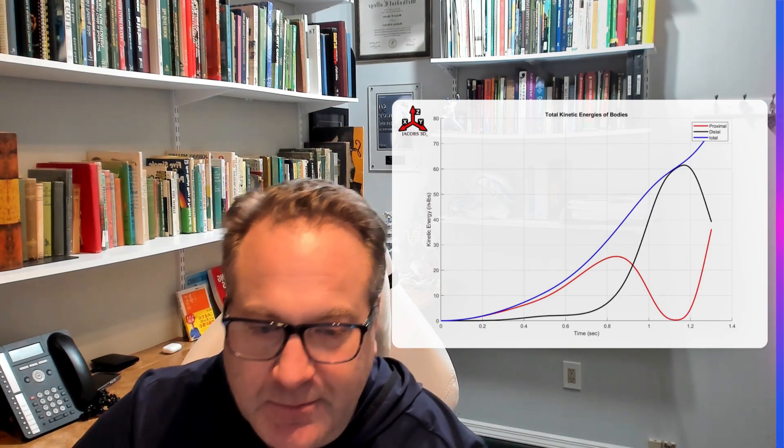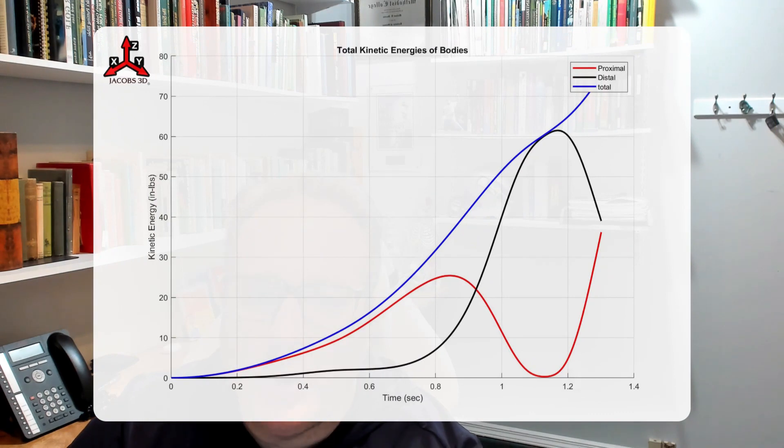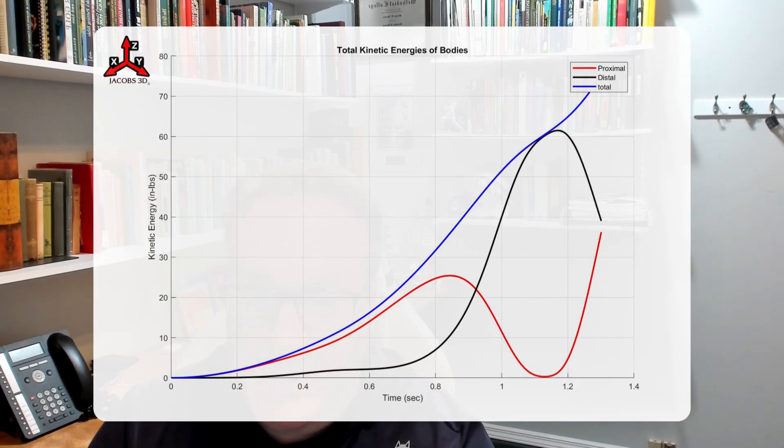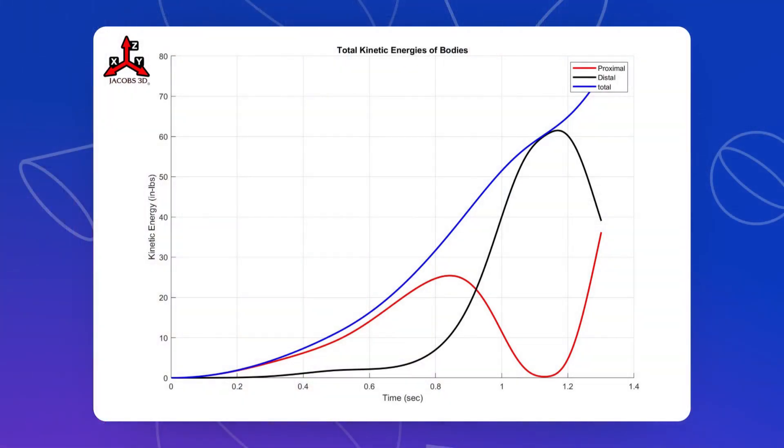So if we dig a little deeper now, we're looking at the total kinetic energy of these two bodies. So if we were to look here, this blue line represents total kinetic energy.